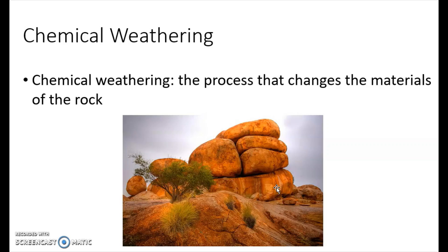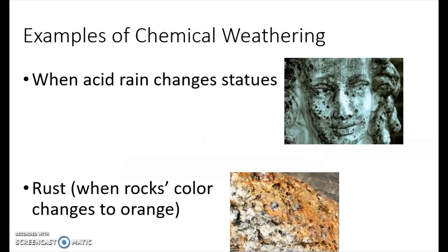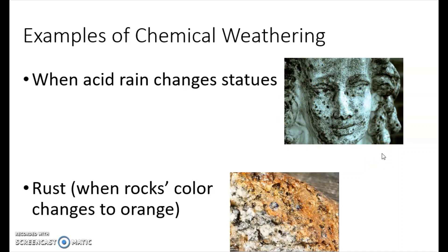Let's look at examples of chemical weathering. Acid rain — acid rain is like dirty rain from all the pollution in the air. When acid rain changes statues, look at that. Do you think when they first made this statue of the girl they put holes all over her face? No, they didn't. But acid rain came, and when the rain fell on the statue it made all these holes in the statue.